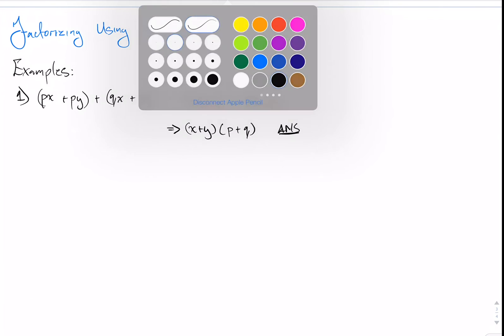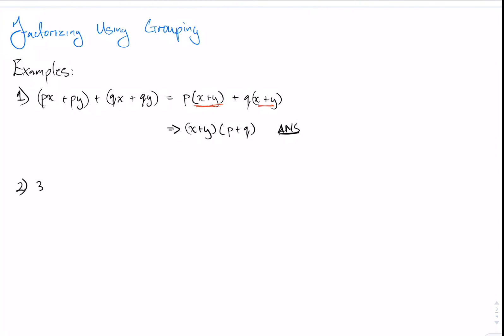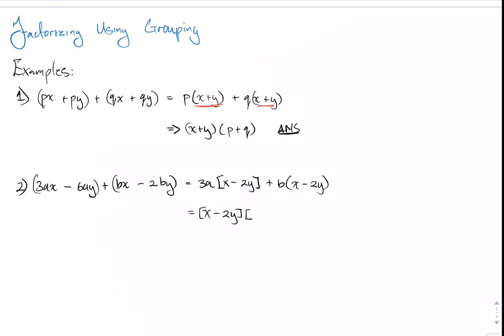Example two: 3ax minus 6ay plus bx minus 2by. In the first two terms, 3a is common; in the second two terms, b is common. Factoring out 3a gives us 3a times x minus 2y, and factoring out b gives us b times x minus 2y. Observing this expression, x minus 2y is common, so factoring it out leaves us with x minus 2y multiplied by 3a plus b.